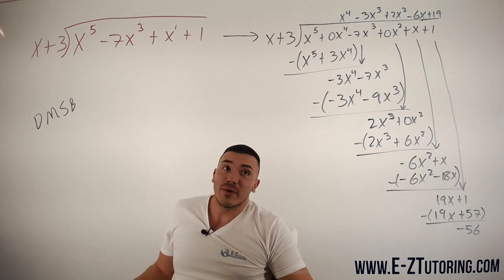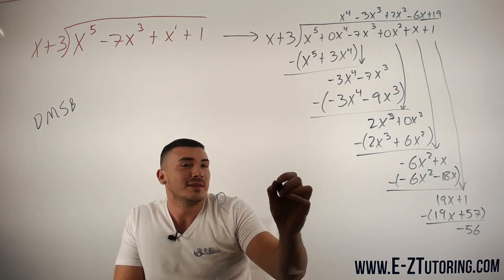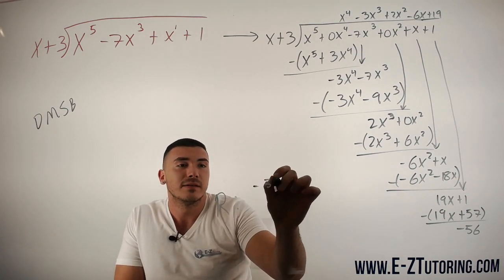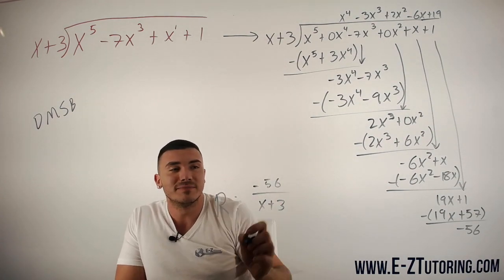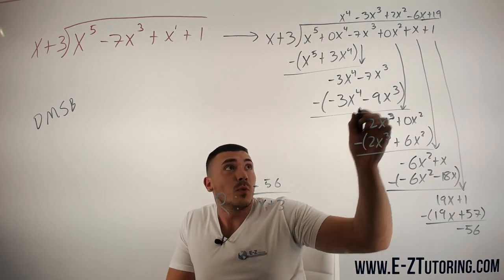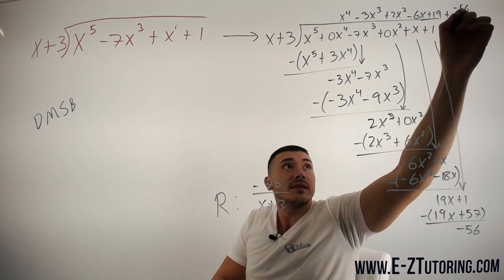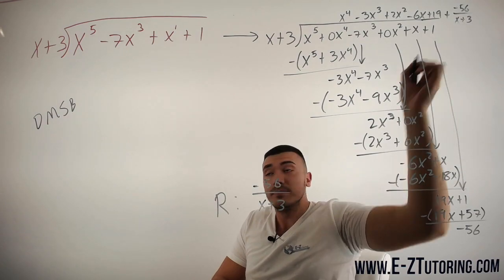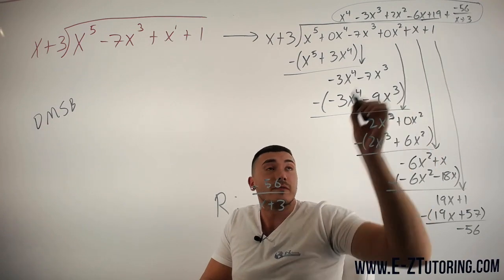If you'd like to know how to write your remainder, you simply take the remainder, negative 56, and you put it over whatever you were dividing by, which is x plus 3. So if we want, we could actually add on over here plus negative 56 over x plus 3, and that would be your entire answer right over there.